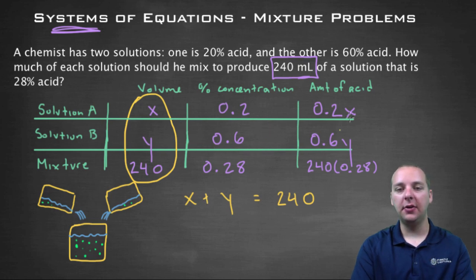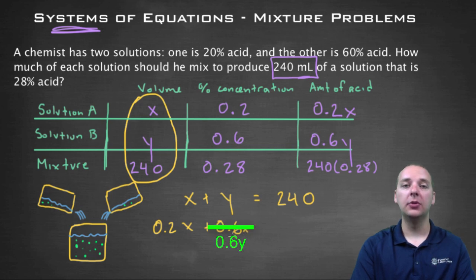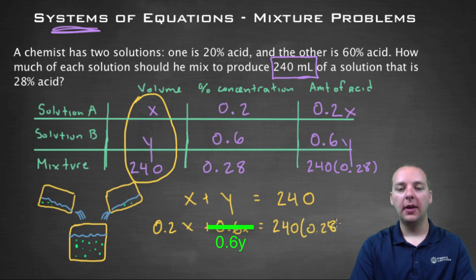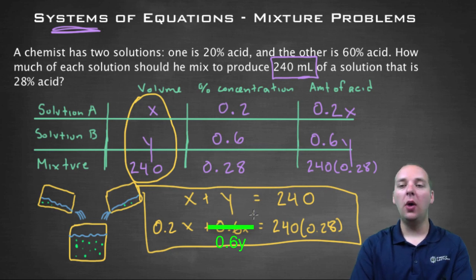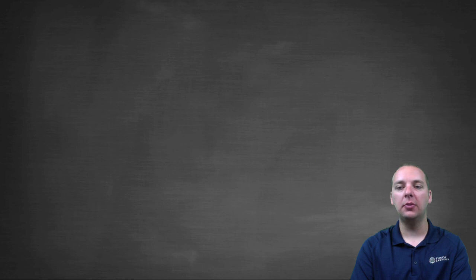So let's see if we can find another equation. The only other place I see variables is over here in the third column. The amount of acid in solution A, amount of acid in solution B, and the amount of acid in the final mixture. Well I think we can do the same thing. I think we can add the acid from solution A to the amount of acid that we have from solution B, and that should equal 240 times 0.28. And what we just made here was a system. This is a system of equations: two equations with two unknowns, and we can solve this system here. And what method we use to solve that system is totally up to you.